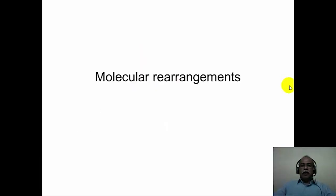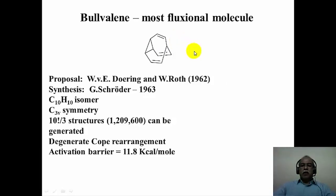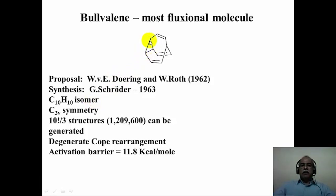Let us start with molecular rearrangements. Molecular rearrangement is a very interesting phenomenon in organic chemistry and one of the most fascinating molecules which undergoes rapid rearrangement is called bulvaline. The structure of bulvaline is shown here - a very simple structure with molecular formula C10H10. It possesses a threefold axis of symmetry passing through the center of the cyclopropyl ring and through the methane carbon, which is a C3 axis of symmetry.